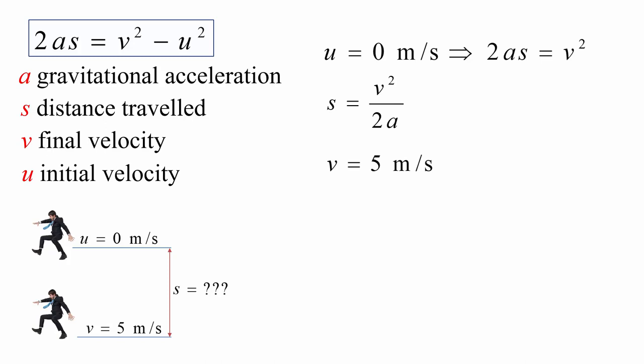Now, V is 5 meters per second. So make that substitution. V squared would be 5 squared, 25. And 25 divided by 2 will be 12.5. So our formula for the distance fallen, in terms of the gravitational acceleration, is S equals 12.5 over A. So that means for any value of A, we know the distance fallen, where we know after that, that our final velocity will be 5 meters per second.